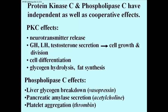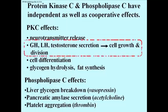Phospholipase effects include the stimulation of the release of hormones that enhance liver glycogen breakdown, and the secretion of amylase by the pancreas to help digest intestinal carbohydrates. Phospholipase C also stimulates liver production of some blood clotting factors, like thrombin shown here.